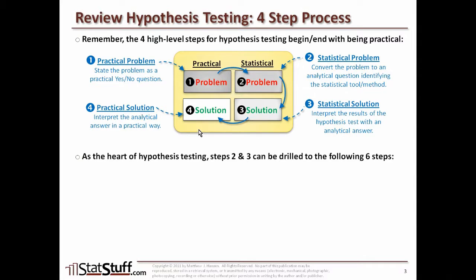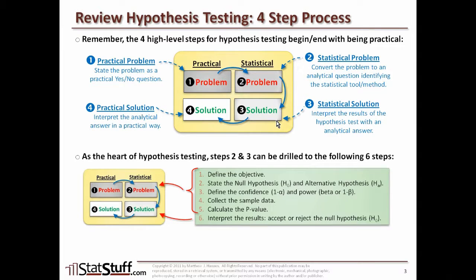At the heart of hypothesis testing — for steps two and three — we drill down to six additional sub-steps: defining the objective, stating the null and alternative hypotheses, defining the confidence and power levels based on alpha and beta risks, collecting sample data, calculating the p-value, and then interpreting the results. This is where we decide whether to accept or reject the null hypothesis.